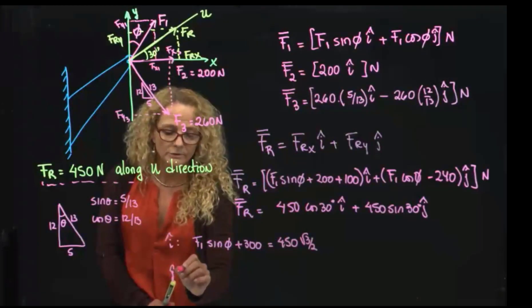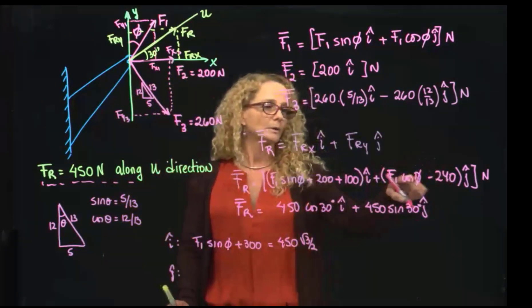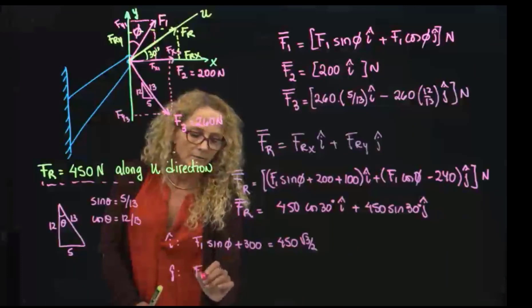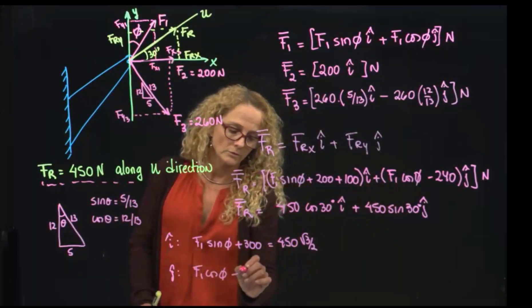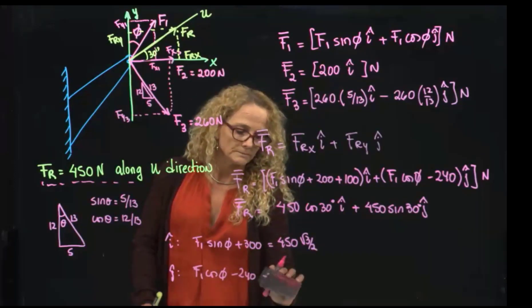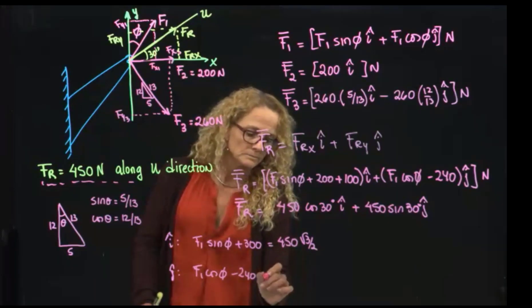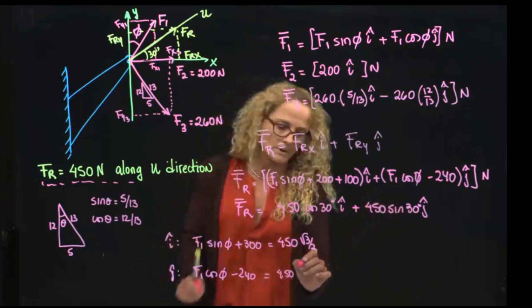And my second equation is in J-direction, and this is F1 cosine of phi minus 240 will be equals to 450 times sine of 30, which is 1 half.